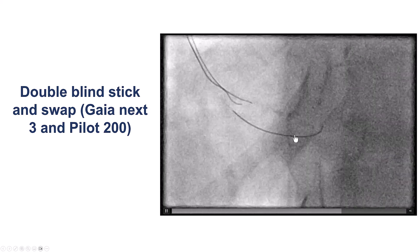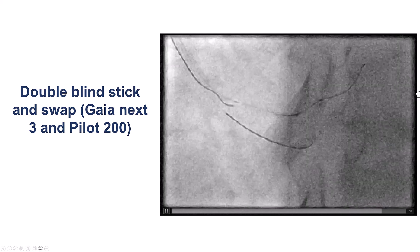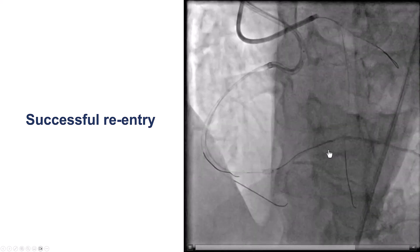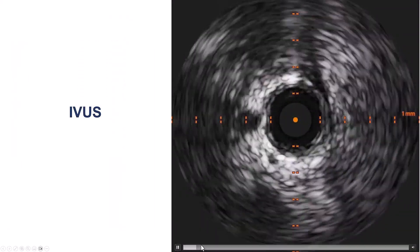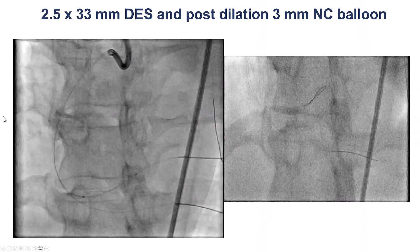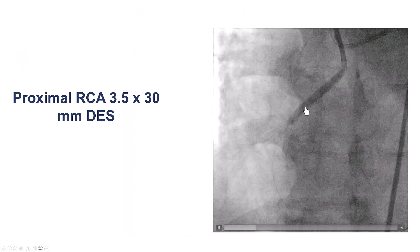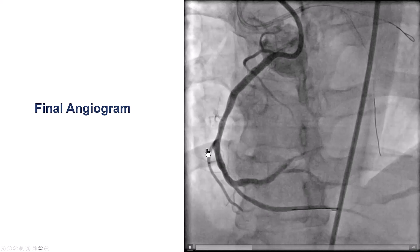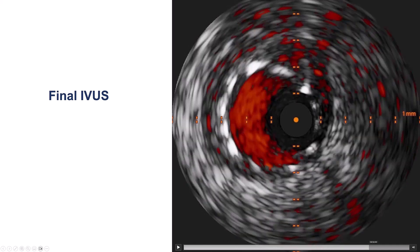In cases like this where the vessel is relatively small, the double-blind stick and swap can be useful — creating a puncture and then advancing a polymer wire along the course of the vessel. We confirmed with contralateral injection that we were inside the distal true lumen in a small branch, redirected the wire during injection, then performed balloon angioplasty. Intravascular ultrasound showed some calcification but the vessel was acceptable. We placed a 2.5 by 33 mm drug-eluting stent, post-dilated it, and placed an additional stent more proximally in the RCA, achieving a nice final result with TIMI flow into the right posterior lateral. IVUS showed good stent expansion and apposition in the posterior lateral and proximal right coronary.